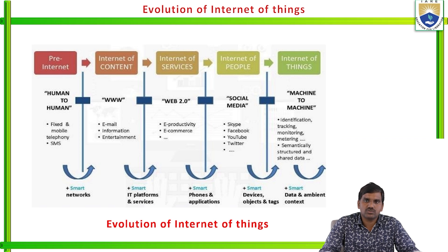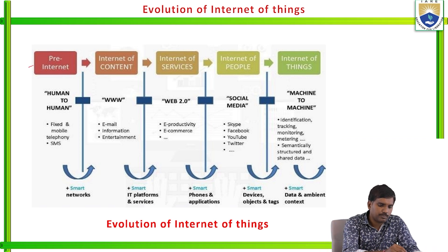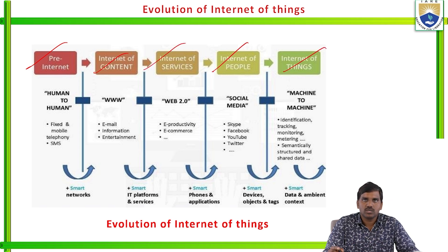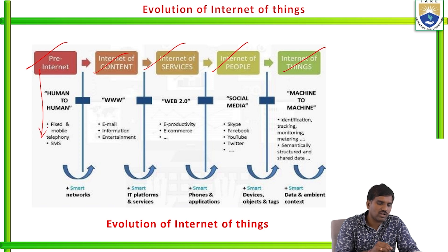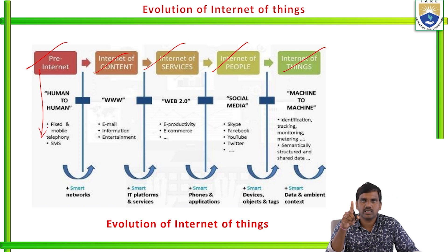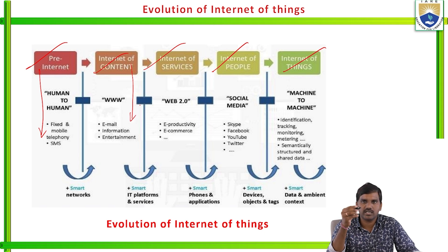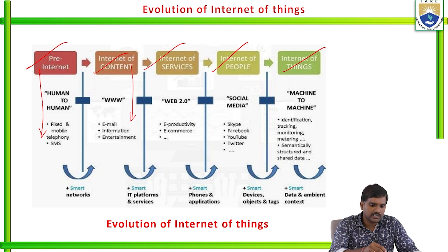These are some stages in the evolution of Internet of Things: starting from pre-internet, then internet of content, internet of service, internet of people, and finally internet of things. In the pre-internet stage, communication was human to human only. The internet of content marks the invention of the World Wide Web. Internet of service is an extension of internet of content, that is Web 2.0.